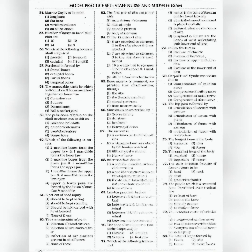Question 67: The sacrum is — the answer is option 2: A triangular bone articulated by the 5th lumbar vertebra. Question 68: Intervertebral disc is — the answer is option 2: A pad-like structure between two adjoining vertebrae. Question 69: Lumbar puncture is done — the answer is option 3: Between the 3rd and 4th lumbar vertebra.